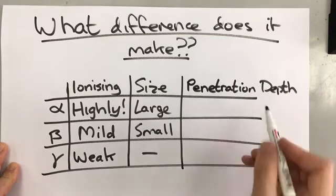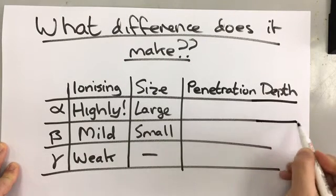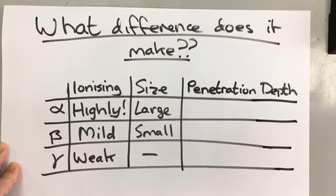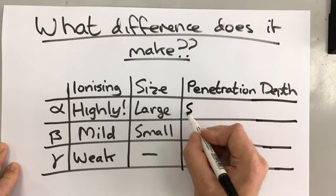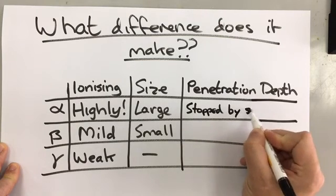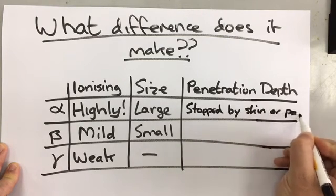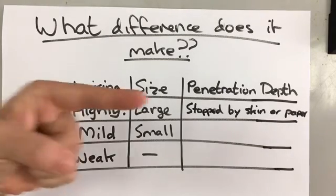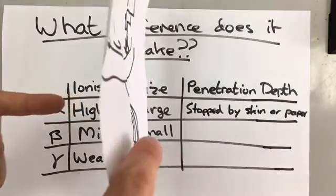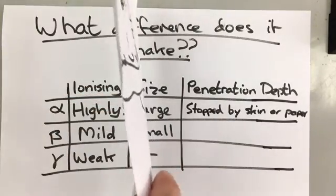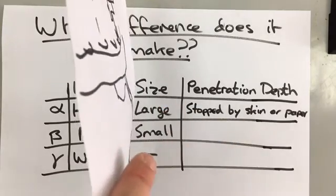Penetration depth for the larger particle, the alpha particle, is much shorter. Alpha particles are stopped by skin or paper. If I had an alpha particle source shooting this way, I could put a piece of paper there and the alpha particles would just get stopped by the piece of paper, they would not be able to come through this side.